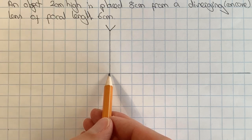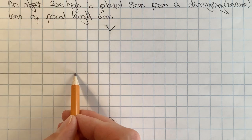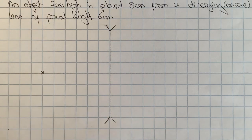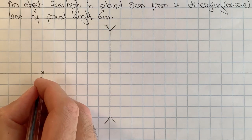So as I'm going to draw the object over here, I'm going to mark in my focus which I'm told is six centimeters away - one, two, three, four, five, six - and I can label that with an F.